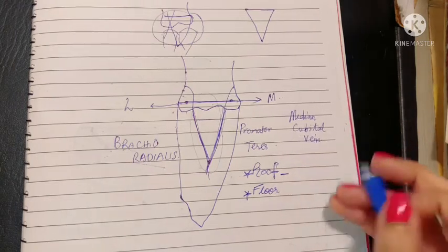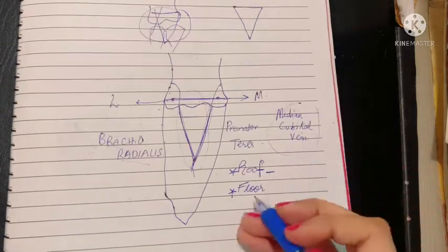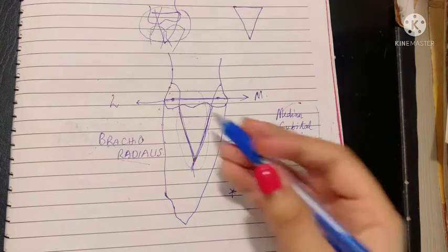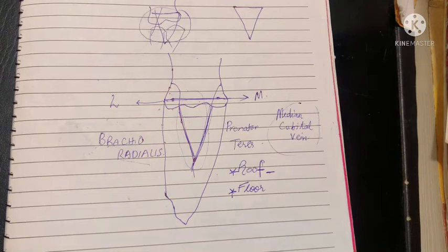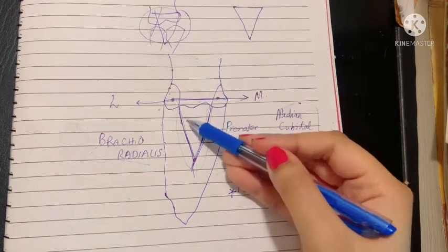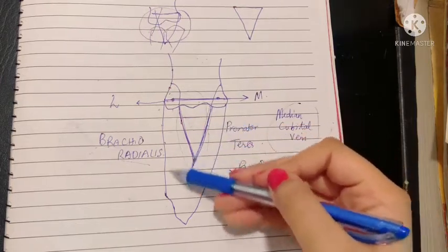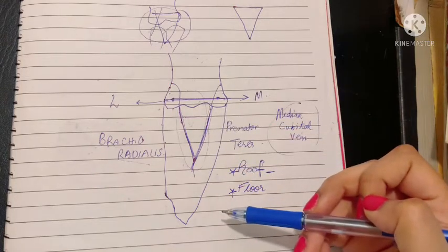The median cubital vein combines the cephalic and basilic veins, and this is where nurses or doctors inject. The roof also includes skin, superficial fascia, deep fascia, and finally the bicipital aponeurosis, which is very important. The biceps muscle from above forms an aponeurosis lying just deep to the deep fascia.